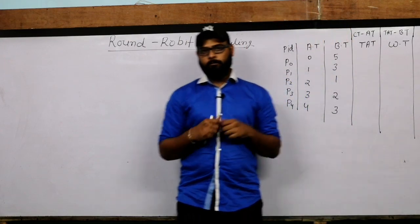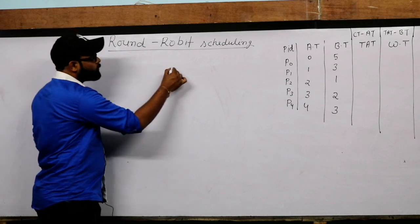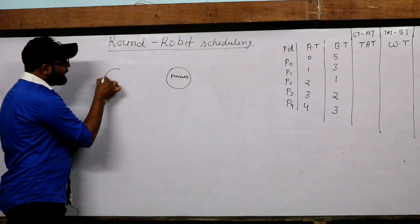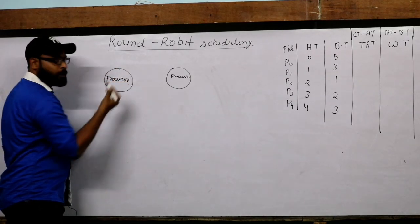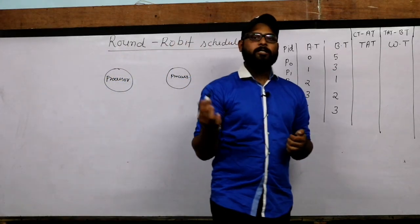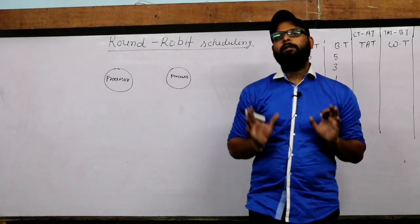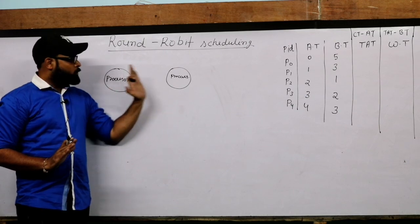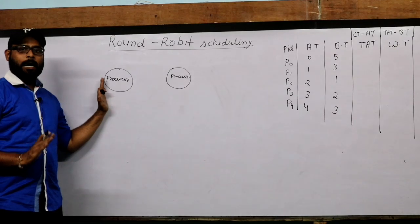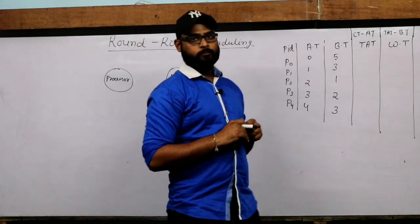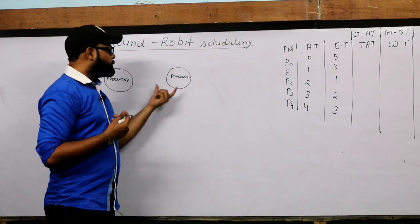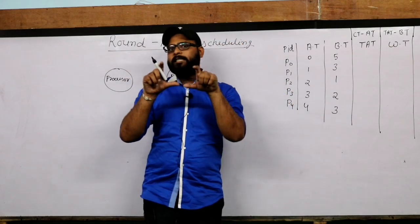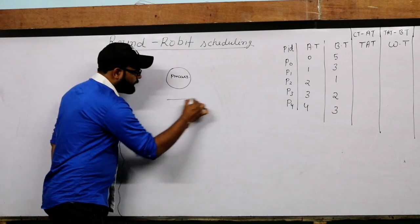Each program in the running state is called a process. The processor is the execution engine which executes that process. There are two entities: one is called process and one is called processor. The process goes into the processor, and then the processor produces the output. The place where all processes reside is called the ready queue or circular queue.